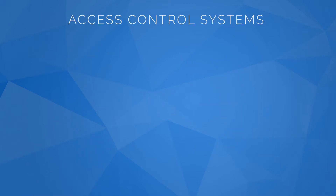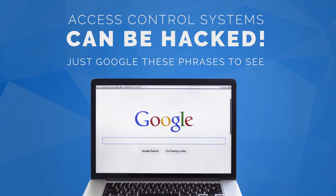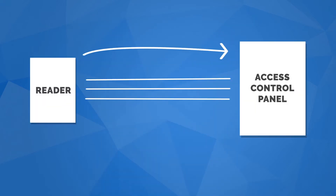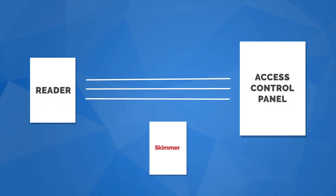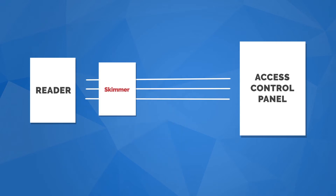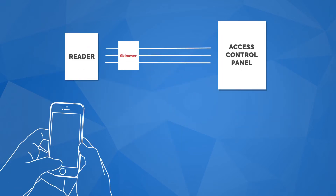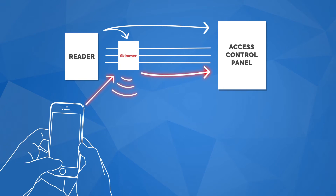To see how easy it is to hack an access control system, Google any of the following phrases: WeGand reader hack, WeGand reader security flaw, WeGand reader vulnerability. Hackers can slip a skimmer into many readers, even some with advanced technology, and within seconds harvest credential information to sell or use to access a facility and deny access to authorized personnel. Hacking a physical access control system can compromise lives, safety, and assets.